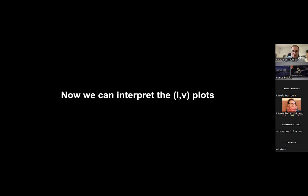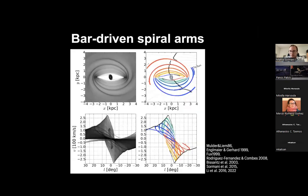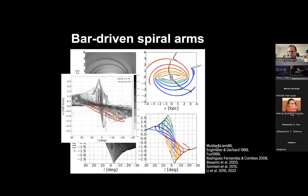Now we can use this theoretical knowledge to interpret the LV plots and the features I was showing before, starting at three kiloparsecs from the center and gradually moving inwards. The bar-driven spiral arms: the 3 kiloparsec arm was explained, first I think by Mulder and Liem in 1986 using impressive simulations for the time, as one of these spiral arms driven by the bar just outside the bar. In the face-on view this is what the spiral arms look like, and in LV space they look quite similar to the 3 kiloparsec arm.